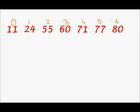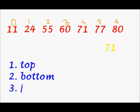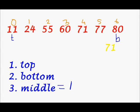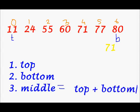Let's say I want to search for element 71. The first thing I will do is create three integer variables: top, bottom, and middle. Initially, top is the first element of the array — index position 0, represented by t. Bottom is the last position of the array, represented by b. Middle is given by: middle = (top + bottom) / 2. So right now, middle = (0 + 6) / 2 = 3. So the third index position is my middle element.